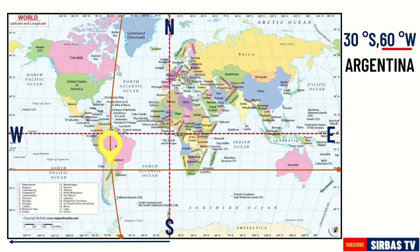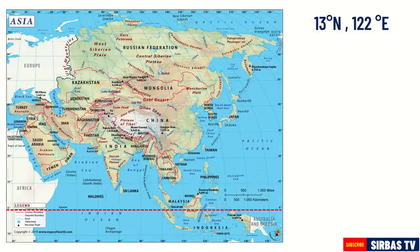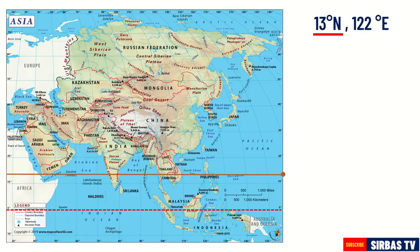Let us have another example. Which country is located on 13 degrees north and 122 degrees east? The first step is to find the location of the latitude, which is 13 degrees north. In this case, here is the location of 13 degrees north. Then, we will draw a horizontal line to serve as a guide.